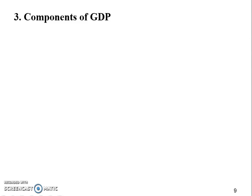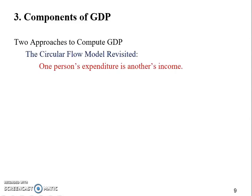Let's talk about the components of GDP. We're going to start with the two approaches to compute GDP. The idea comes from the circular flow model, or circular flow diagram, which we learned in chapter 2. A very important thing we learned from there is: one person's expenditure is another's income.